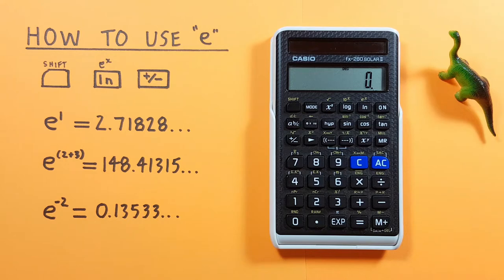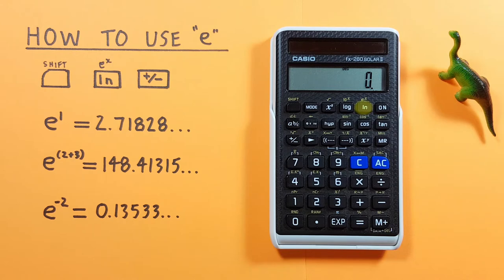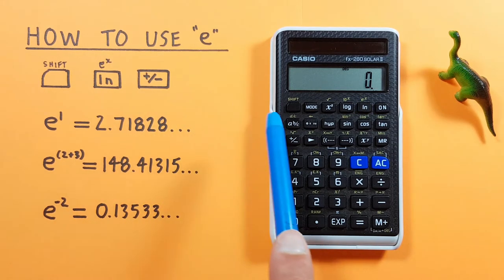To do this, we'll be using the shift key that looks like this, located here, the ln or natural log key with the shift function of e to the power of x that looks like this, located here, and the positive negative key that looks like this, located here.